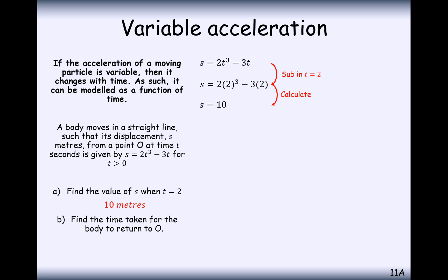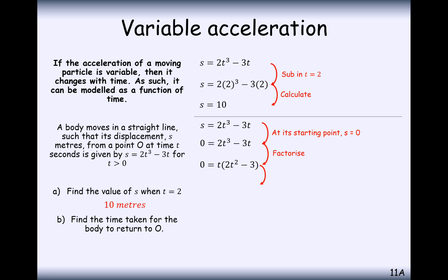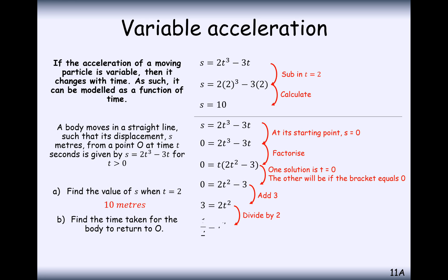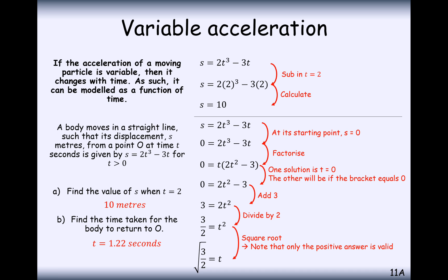Part B is to find the total time taken for the body to return to O. If we want it to return to O, we want S equal to 0, so we substitute that in and do some algebra. We factorise out t — we know t is not going to be 0 since we want it to return to O. Taking 3 to the other side, halving and square rooting, we get the square root of 3 over 2. Taking just the positive square root, rounding to 3 significant figures, that's 1.22 seconds.